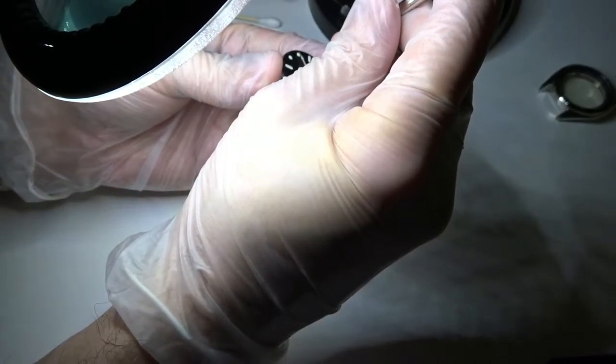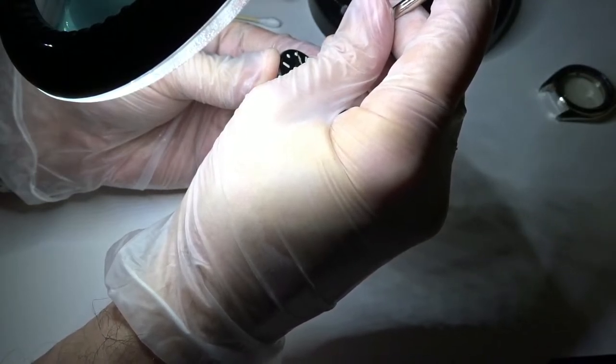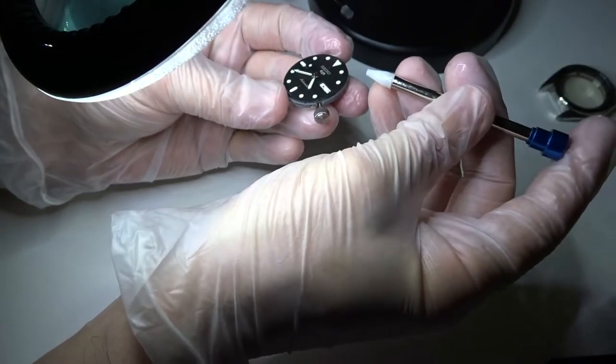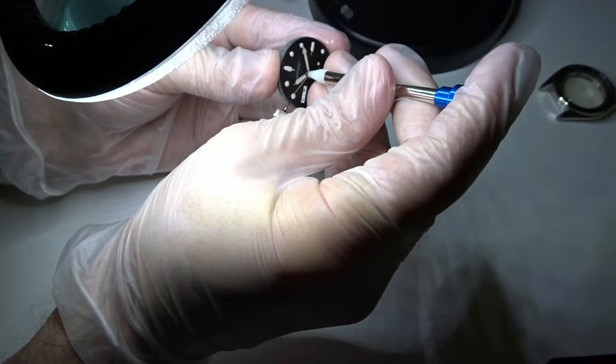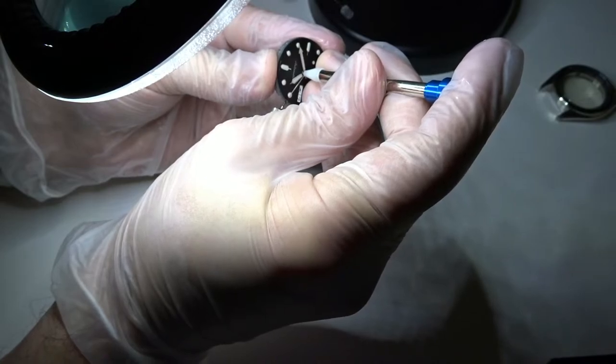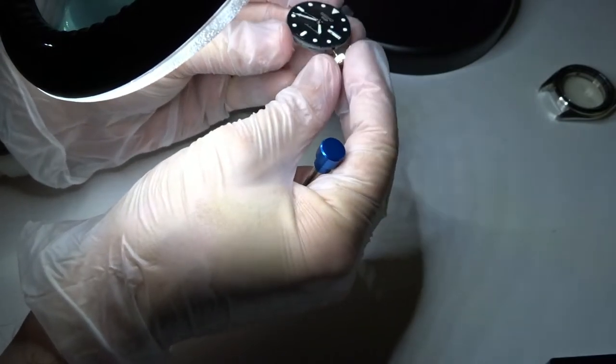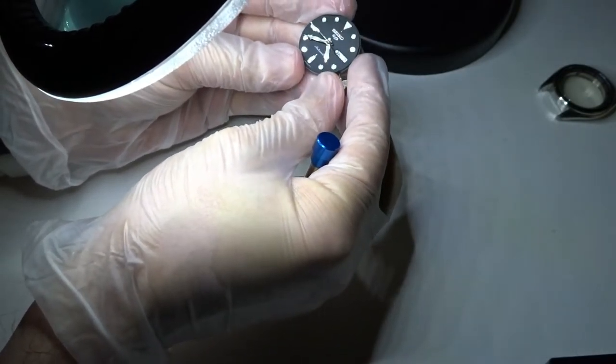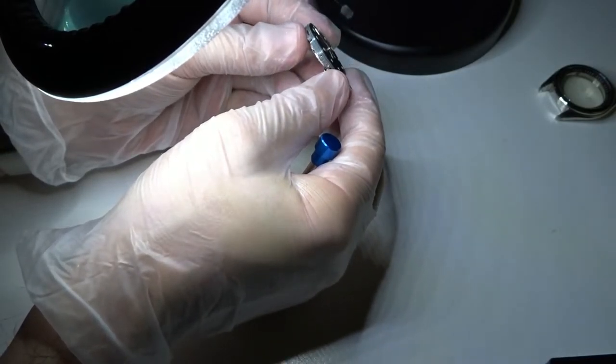So that's what I'm doing right here is I'm just double checking, pressing down firmly. I've had times before where I thought the seconds hand was seated properly and then it turned out it wasn't. I put the movement into the case and then the seconds hand comes loose and I had to redo everything.